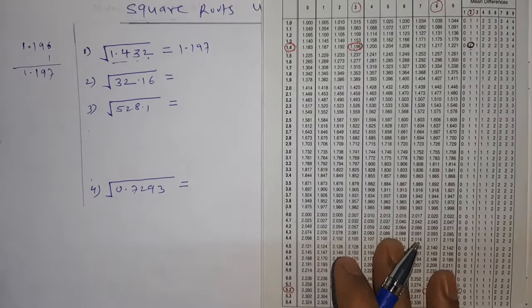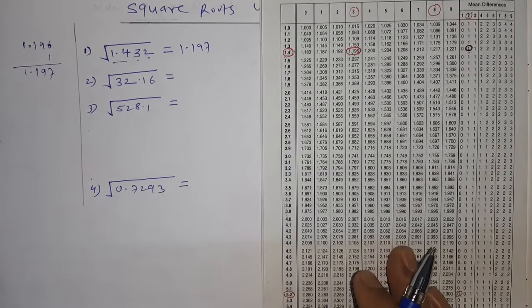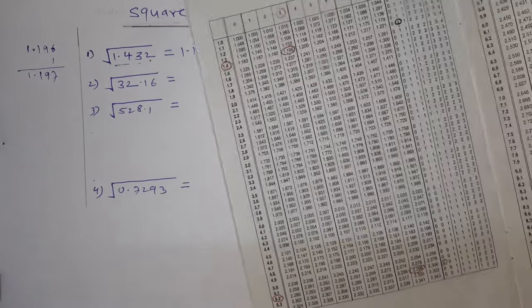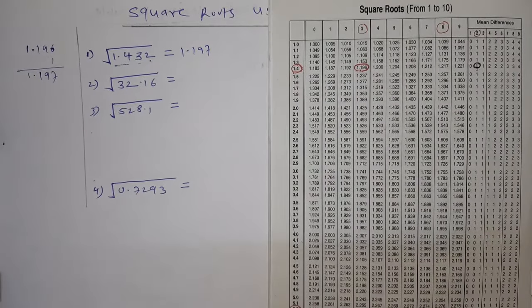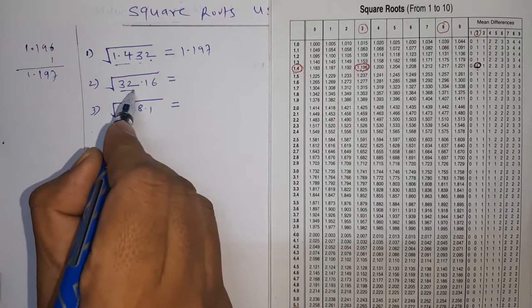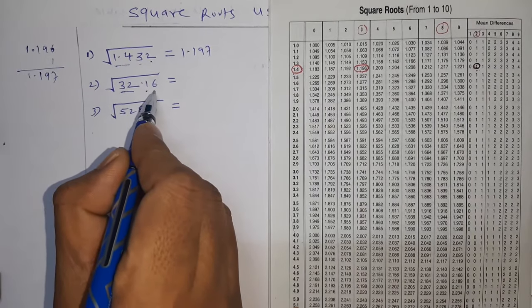Next one. We have 32.16. So first two digits 32, third digit and fourth digit.